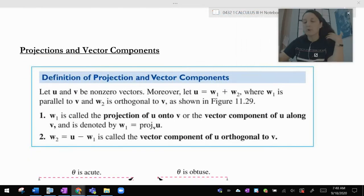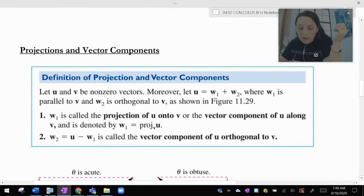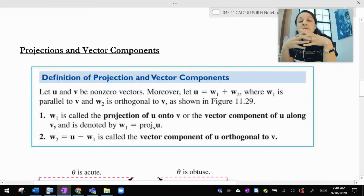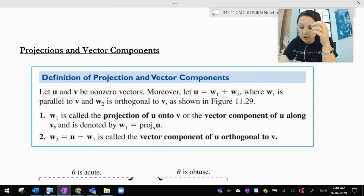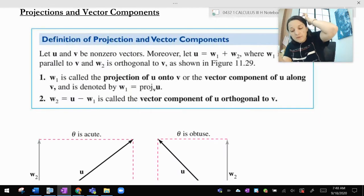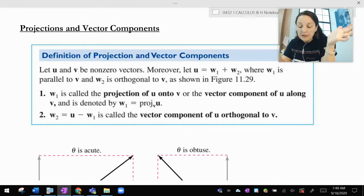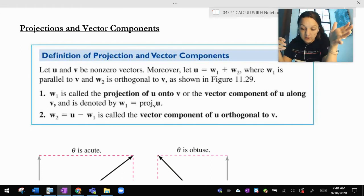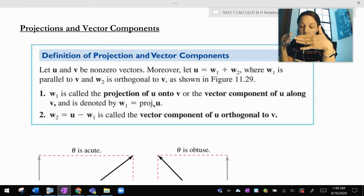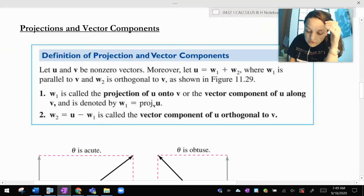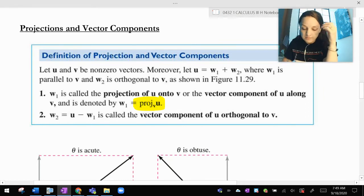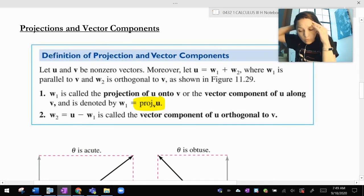Okay. One other thing we can do with vectors, and here comes the part where we're always just over in a word. Here is something called a projection. And I know you do something with this in physics. So it's going to be similar, not exactly the same, but very similar as you've spoken or are speaking physics. So the definition of a projection and vector component, I'm going to read the box and then explain. Let u and v be nonzero vectors. Moreover, let u be w1 plus w2, where w1 is parallel to v and w2 is orthogonal to v as shown in the figure.